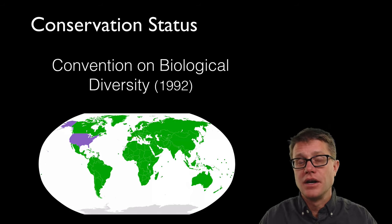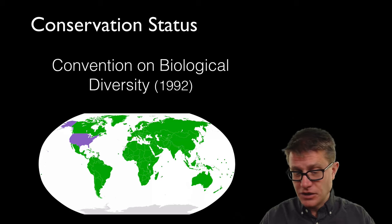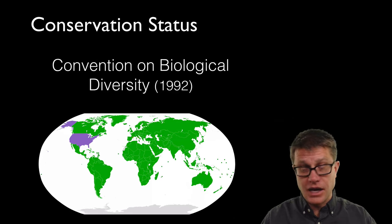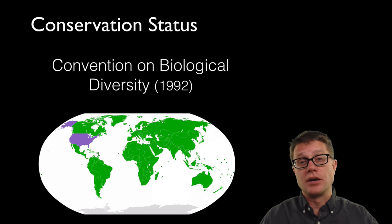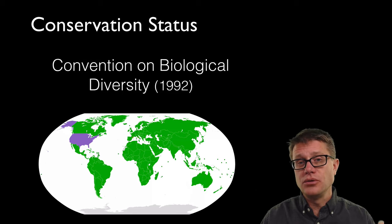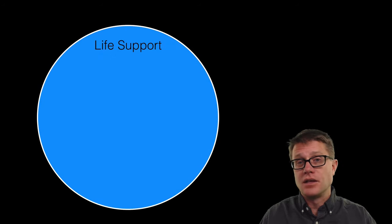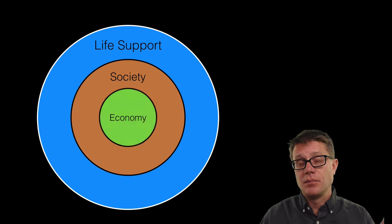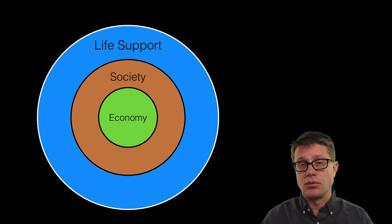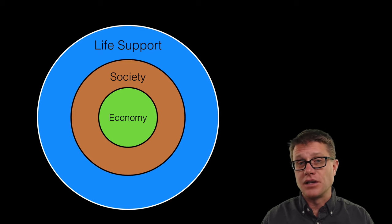All of the green countries here signed on that biodiversity is important, that it has economic importance, and that we are going to try to protect it. But again it is not legally binding. And so we are still seeing huge decreases in biodiversity. It goes back to the idea that the planet supports society but society is driven by economics. We are never going to see decreases in biodiversity loss until there is an economic incentive or a way to do that.